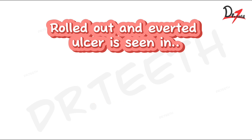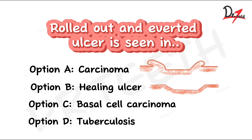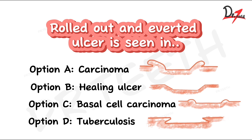The answer is that rolled out and averted edges are seen in carcinoma — option A is the right answer. Option B, healing ulcer, has sloped edges. Option C, basal cell carcinoma, has beaded and rolled out edges. Option D, tuberculosis, has undermined edges. So the correct answer is carcinoma.